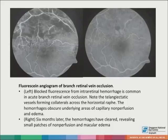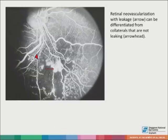This is a fluorescein angiogram of a patient with branch retinal vein occlusion. On the top left, you can see blocked fluorescence from intraretinal hemorrhage. Also note the telangiectatic vessels forming collaterals. The hemorrhages obscure underlying areas of capillary non-perfusion and edema. On the right, six months later, the hemorrhages have cleared and revealed small patches of non-perfusion as well as macular edema. In this fundus fluorescein angiogram, retinal neovascularization with leakage, shown by the arrow, can be differentiated from collaterals that are not leaking, shown by the arrowhead.